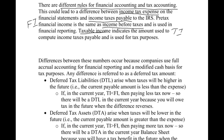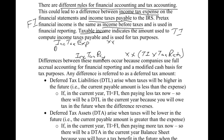Throughout the first half of this chapter — whether you're using the Kiso or the Spiceland book — our journal entry to record taxes will be a debit to income tax expense. Then we'll have a credit to income tax payable. What goes in the middle will either be a deferred tax asset (DTA) or a credit to a deferred tax liability (DTL). We will do this journal entry at the end of the period to record our tax situation for that year.